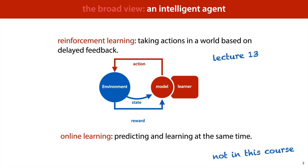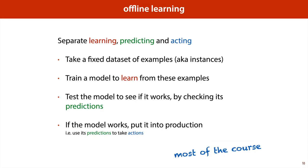One way to simplify this is to take out the actions — to say we're just predicting. So we're predicting and learning at the same time: observations are coming in and we're updating our current predictions for what's going to happen next constantly. That's called online learning. This is something we won't be discussing in this course, but you might run into it in later courses.